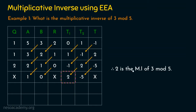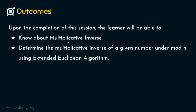To verify: take 3 × 2 = 6. When a number is multiplied by its inverse, the whole value divided by the modulus should give remainder 1. 6 divided by 5 gives remainder 1. So 2 is confirmed as the multiplicative inverse of 3 mod 5. We now have understanding of multiplicative inverse in depth and have determined the multiplicative inverse of a given number under mod n using extended Euclidean algorithm. I will meet you with different numbers in the next presentation. Thank you for watching.